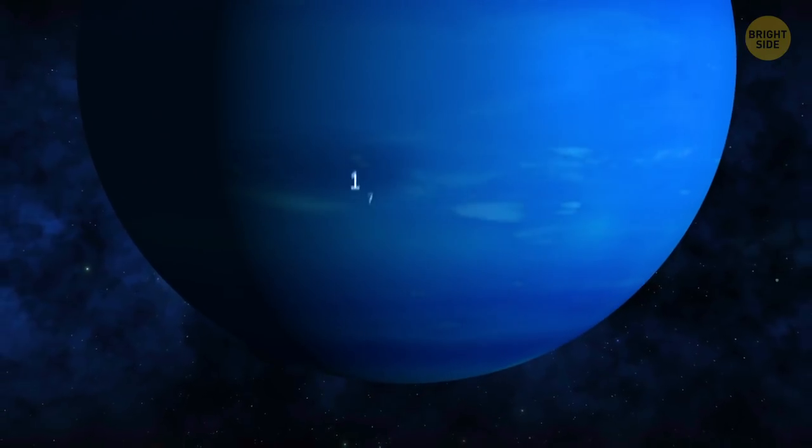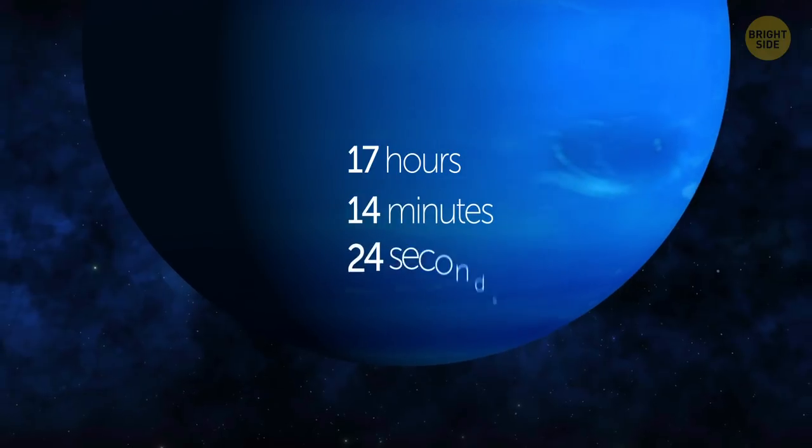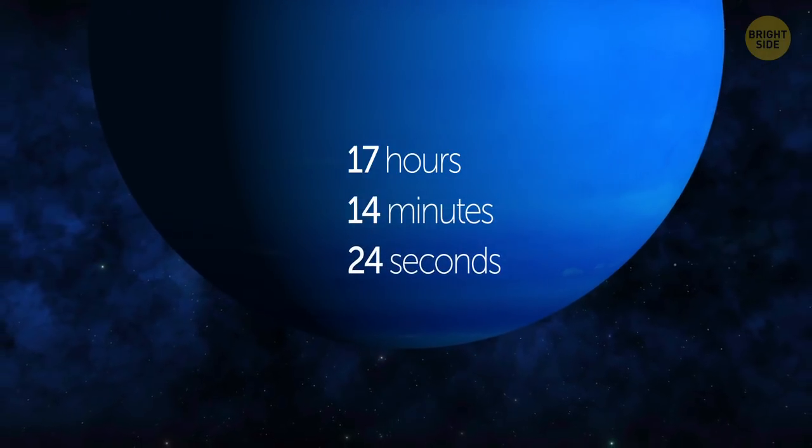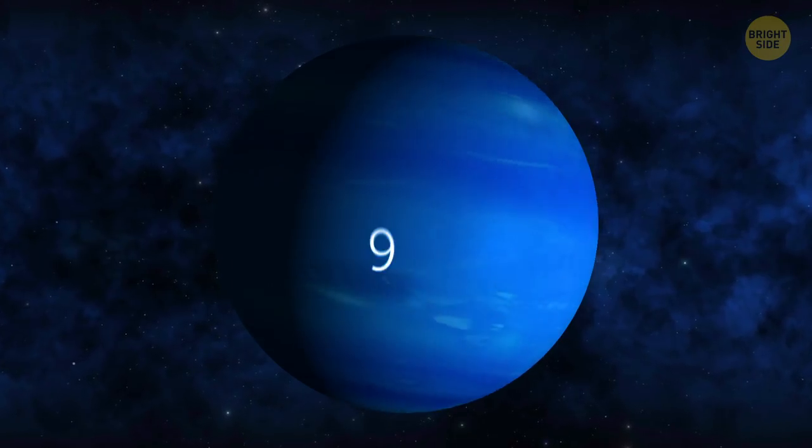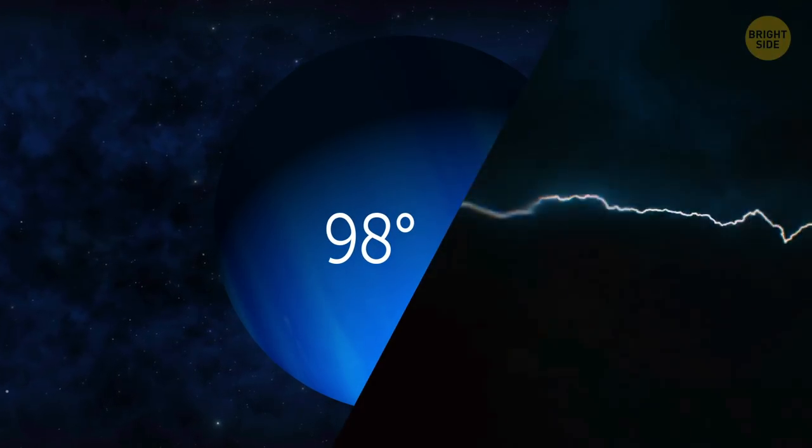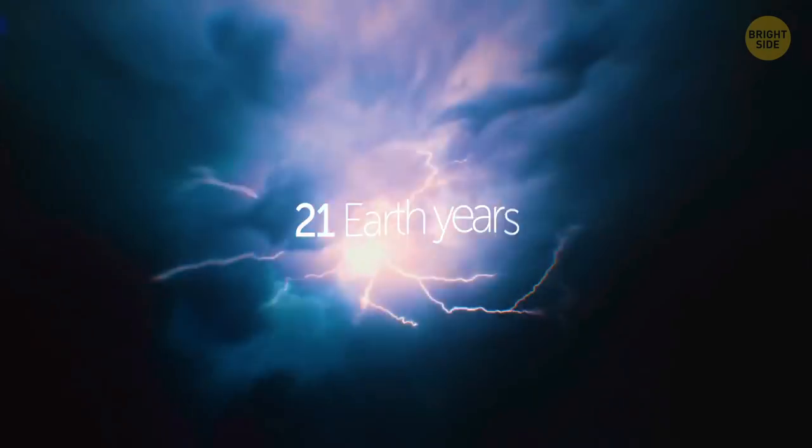A day on Uranus lasts 17 hours, 14 minutes, and 24 seconds. But get this, the planet has a tilt of around 98 degrees, and that makes a season on the gas giant last 21 Earth years.